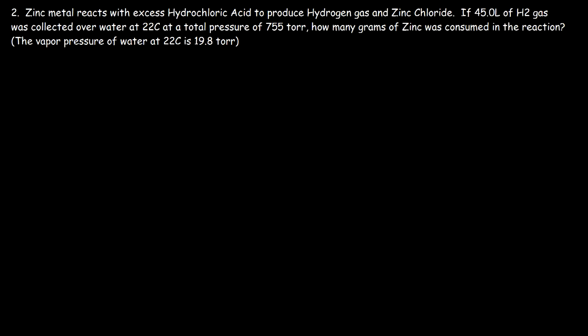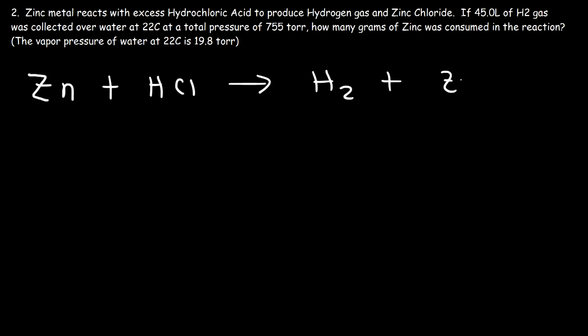Let's try the next problem. Zinc metal reacts with excess hydrochloric acid to produce hydrogen gas and zinc chloride. If 45 liters of H2 gas was collected over water at 22°C at a total pressure of 755 Torr, how many grams of zinc was consumed? The balanced reaction is: Zn + 2HCl → H2 + ZnCl2.